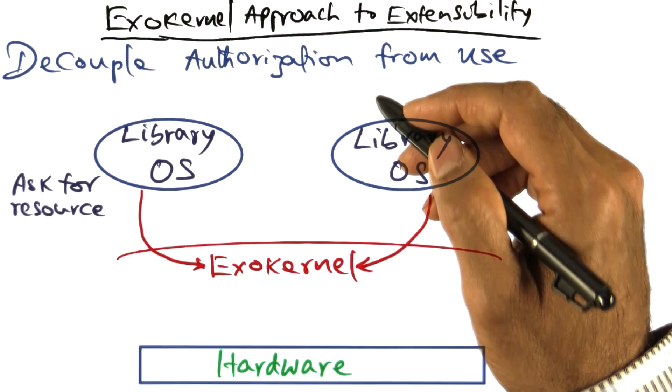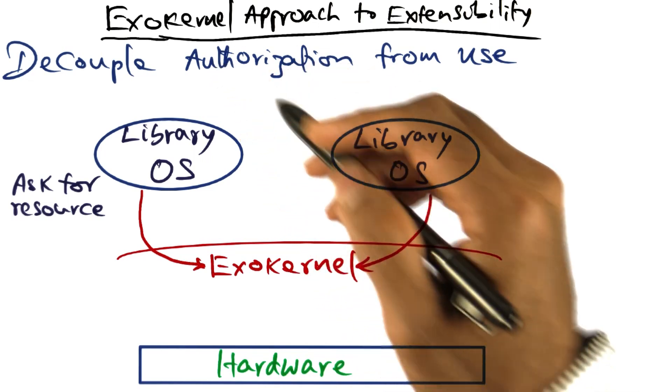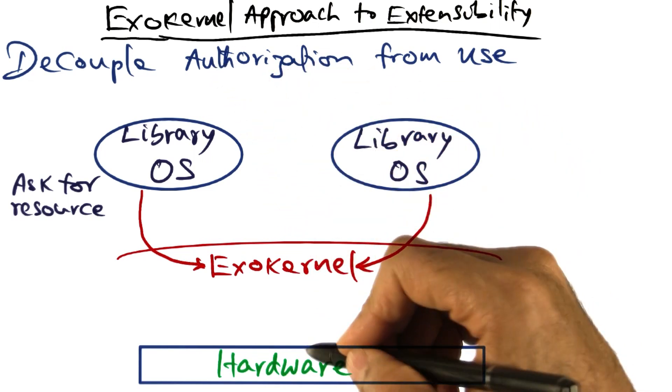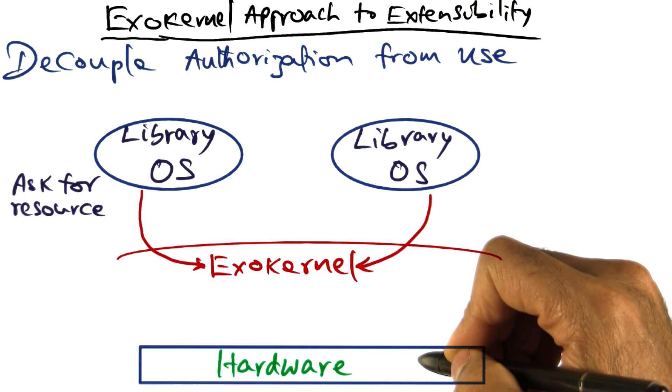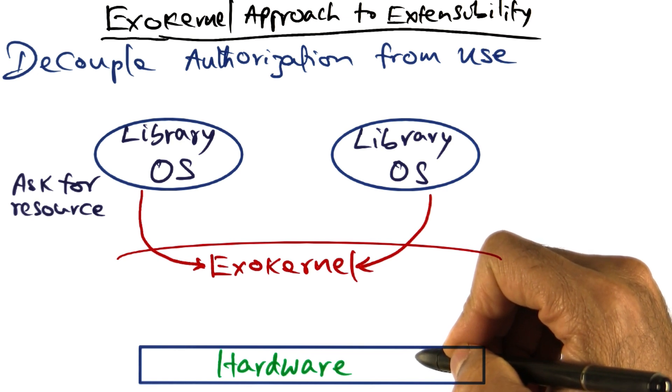Having seen Spin's approach to extensibility, now we will look at ExoKernel's approach to operating system extensibility. The name ExoKernel itself comes from the fact that the kernel exposes hardware explicitly to the operating system extensions living above it. The basic idea in ExoKernel is to decouple authorization of the hardware from its actual use.